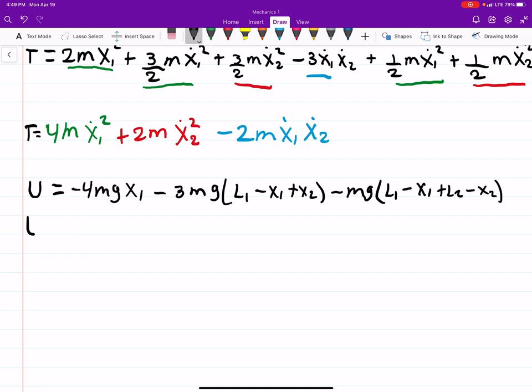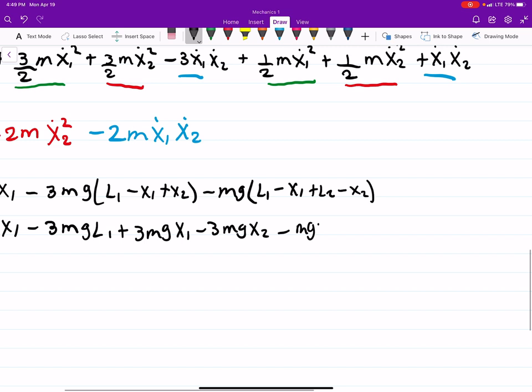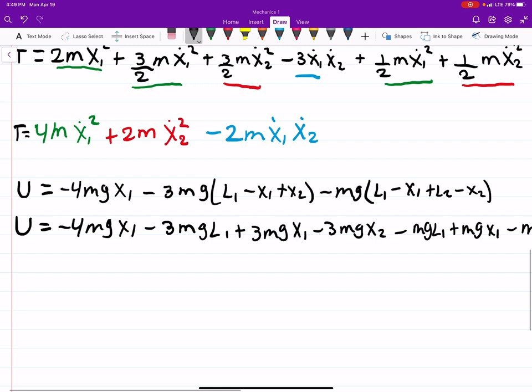Now I'm going to distribute everything. So just again, more algebra. We'll get minus 3mg L1 plus 3mg x1 minus 3mg x2 minus mgL1 plus mg x1 minus mgL2 plus mg x2. So I distributed and now I'm going to try to pick up like terms again. So let's see, what do we have? Well,